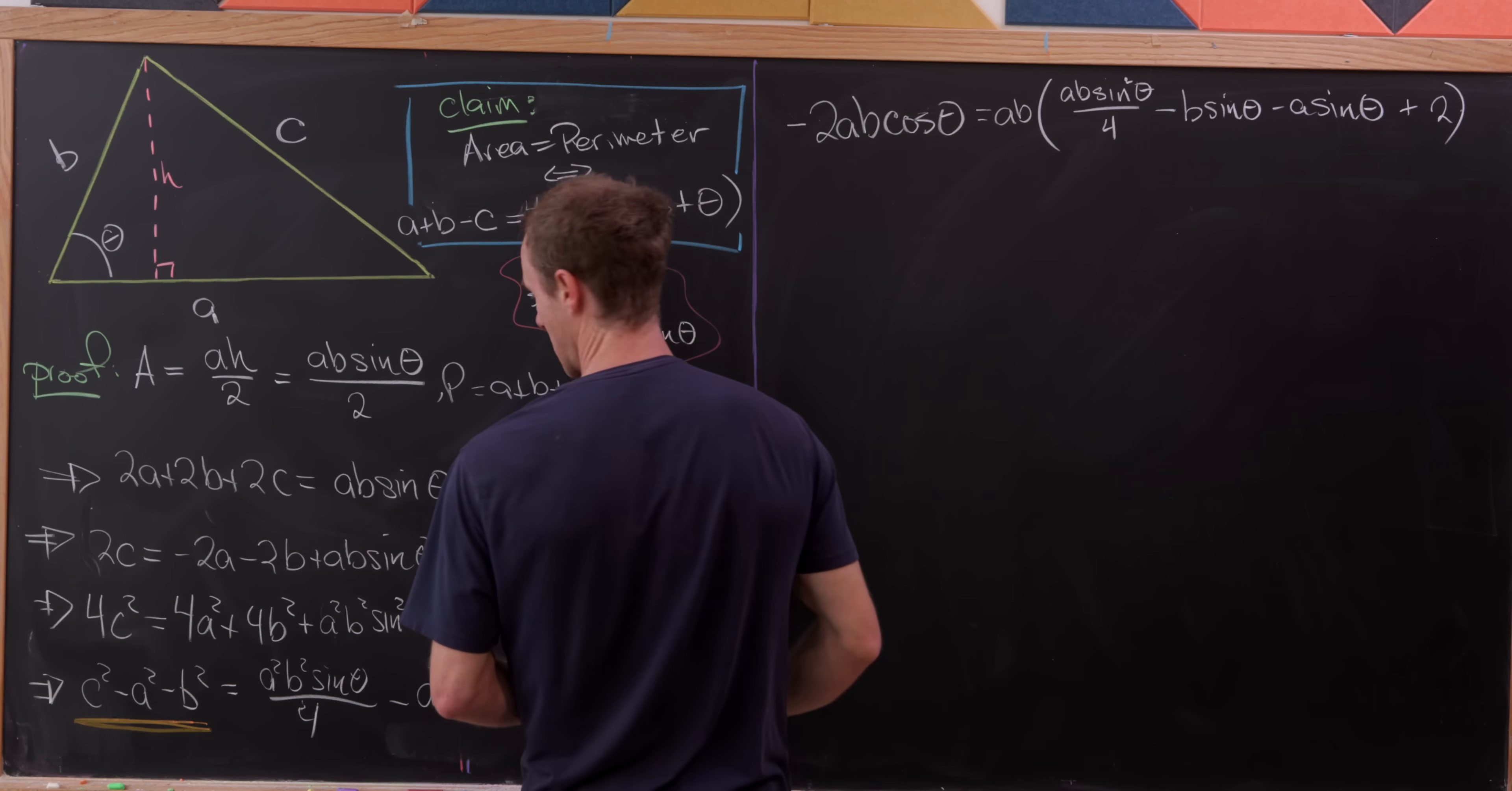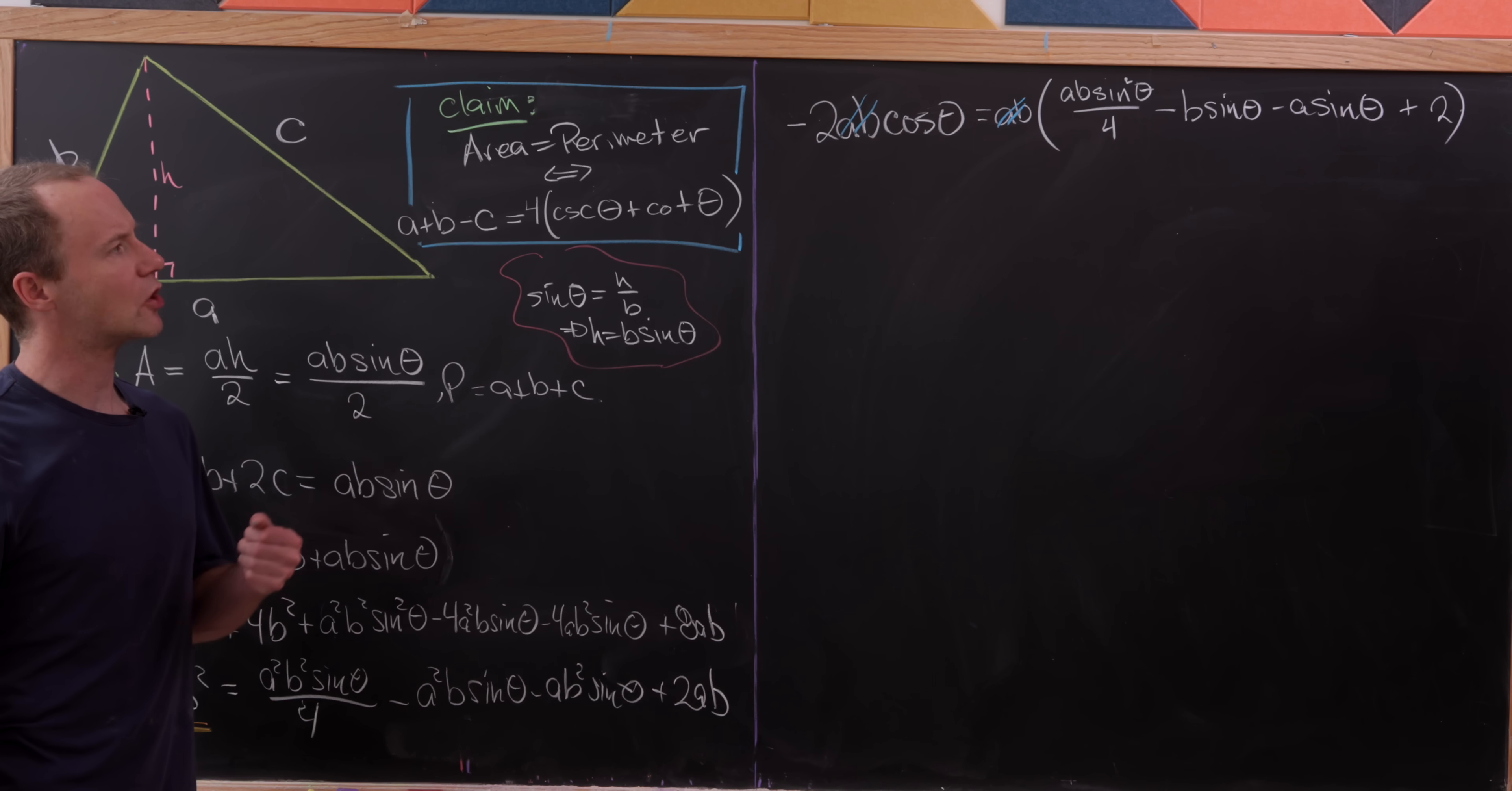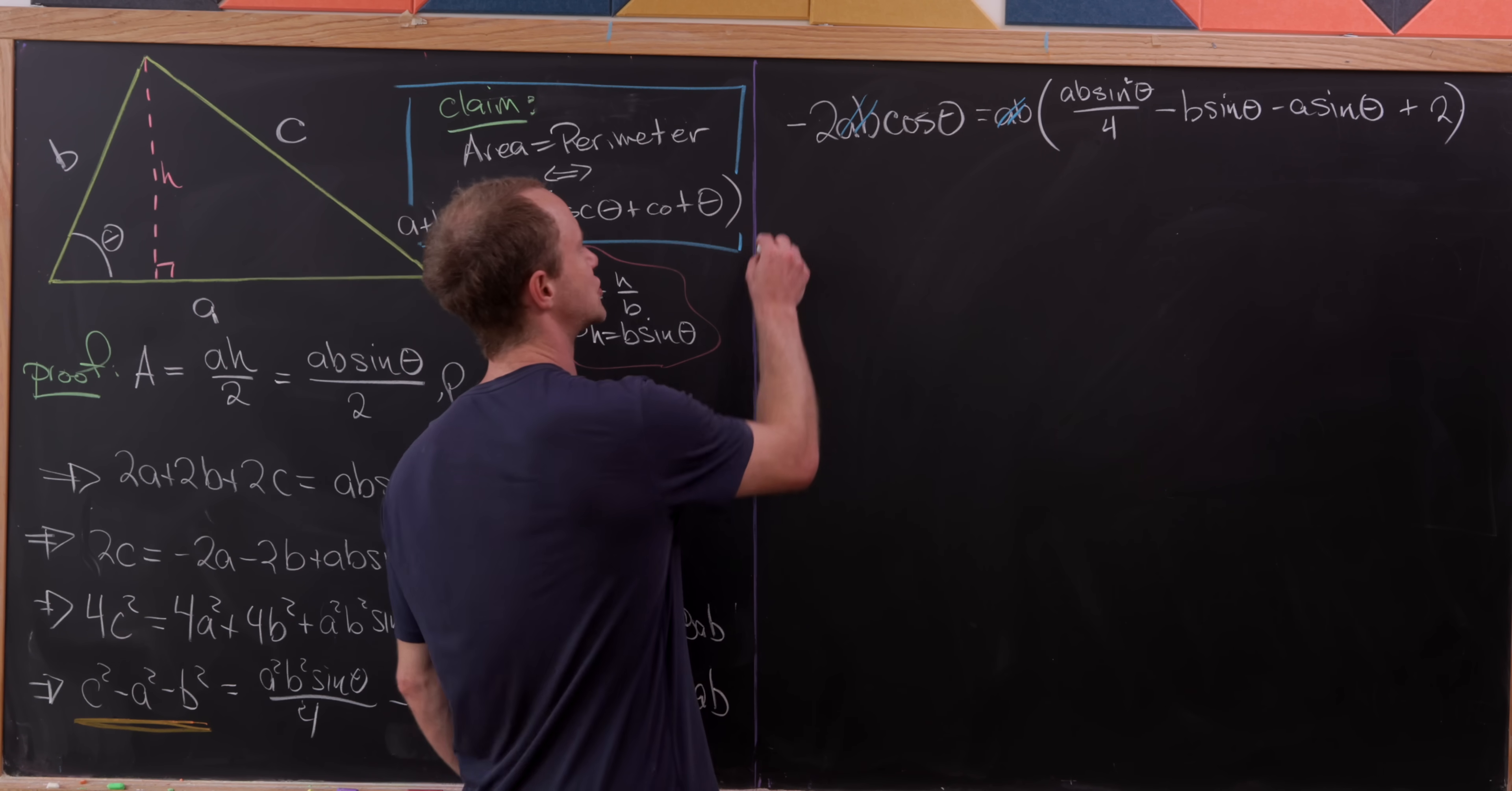Now, next up, the obvious thing to do is to cancel this ab with this ab. And then where are we going to go from there? Well, I'm not going to quite multiply everything by 4 to clear this denominator. I'm going to multiply everything by 2.